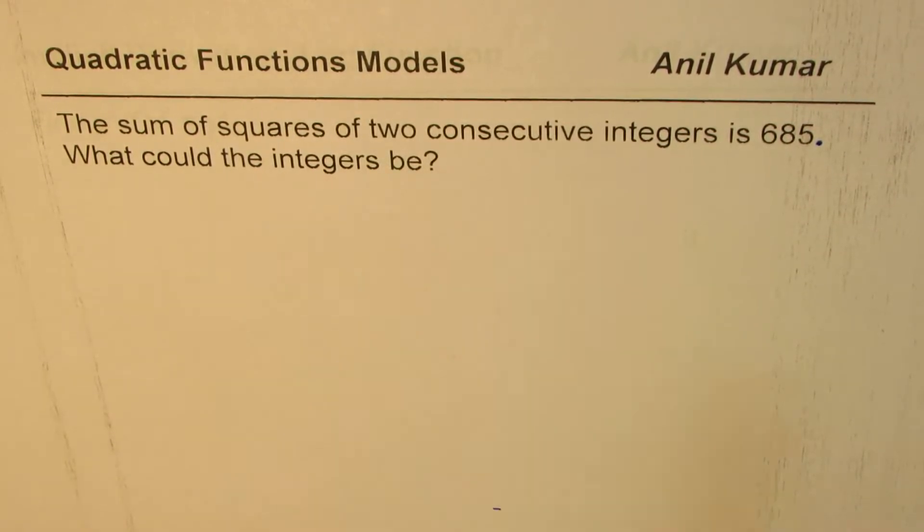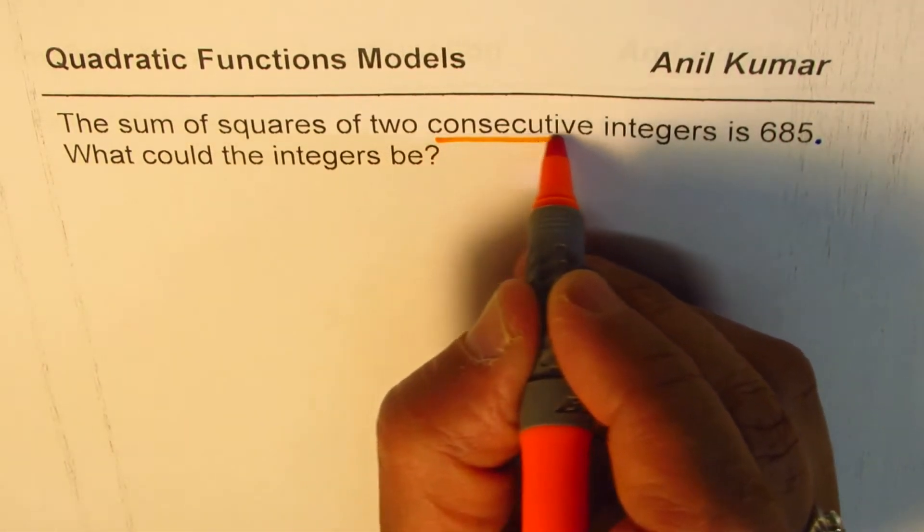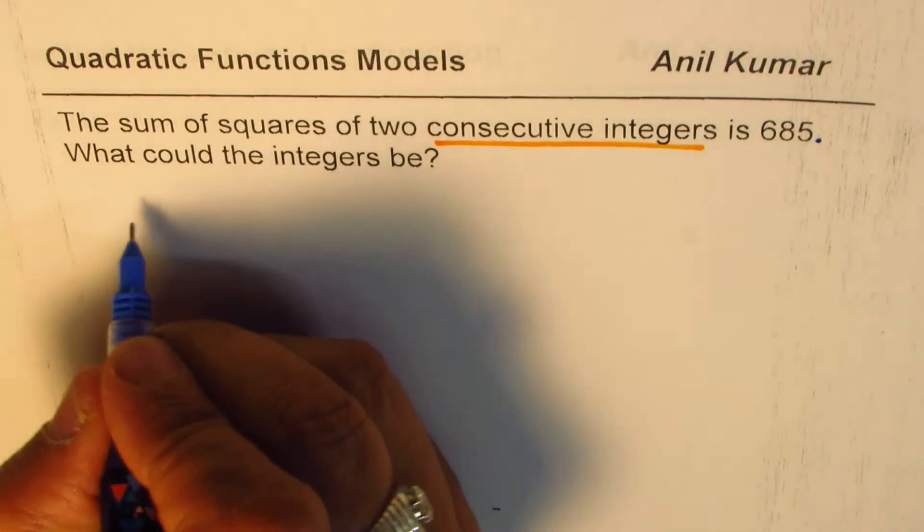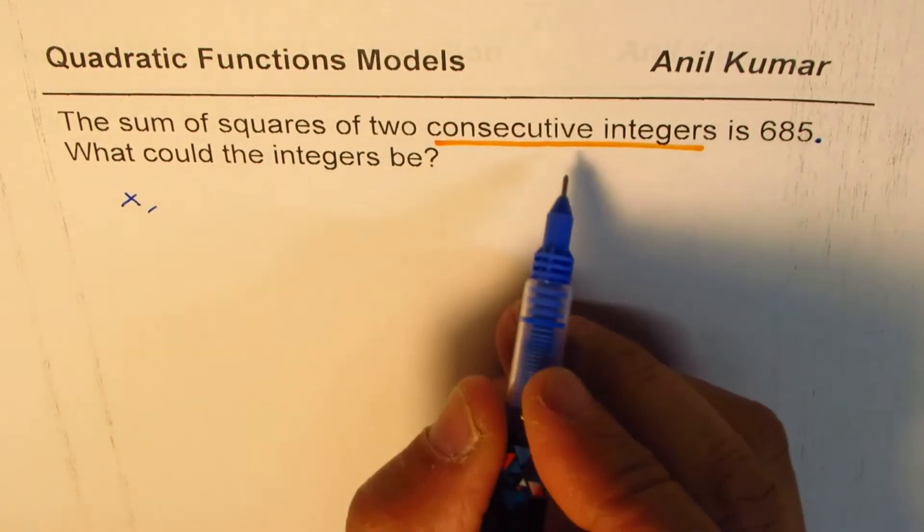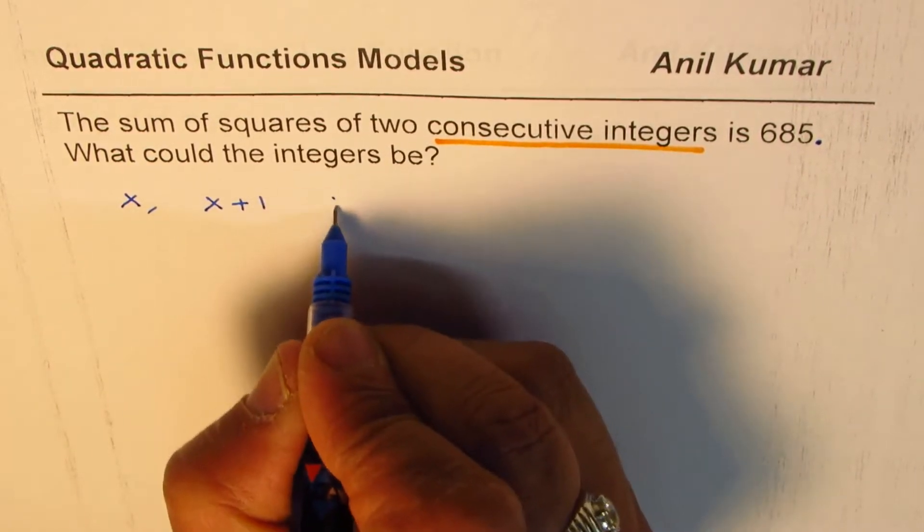Let's try to understand a few terms here. One of them is consecutive integers. That really means that if one integer is x, the other one is one more than that, so it is x plus one. So these are examples of consecutive integers.